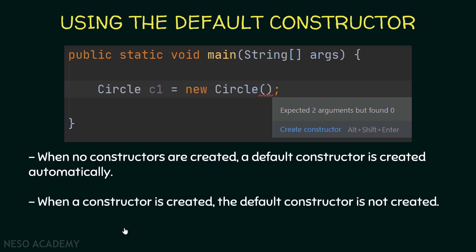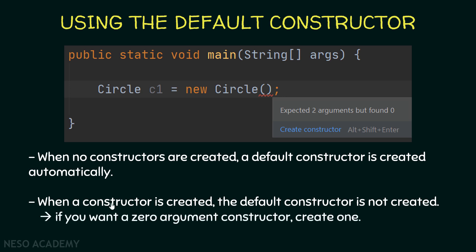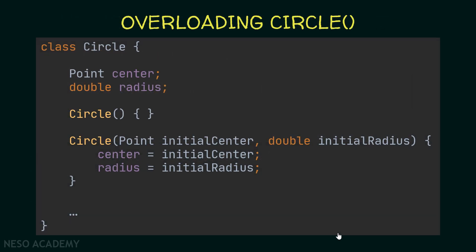When no constructors are created, a default constructor is created automatically by Java. But when we create a constructor, the default constructor is not created automatically. In other words, if you want a zero-argument constructor, you have to create it yourself. Now we are creating two constructors — we are overloading the constructor. The first takes no parameters and has an empty body, and the second is the same as before.